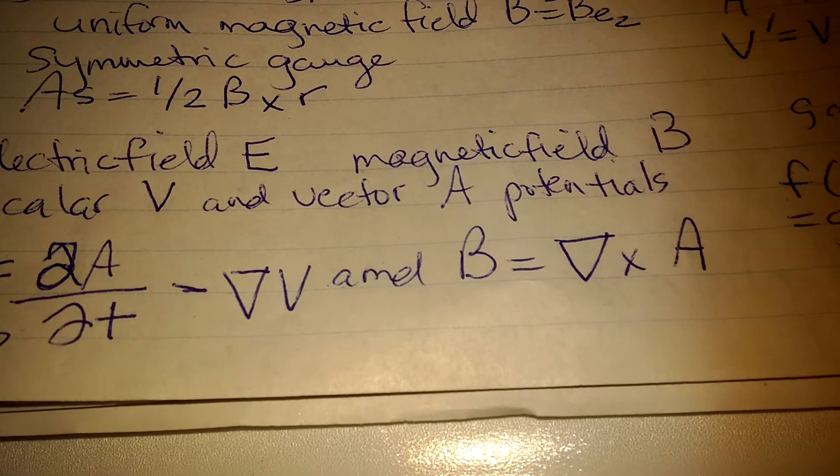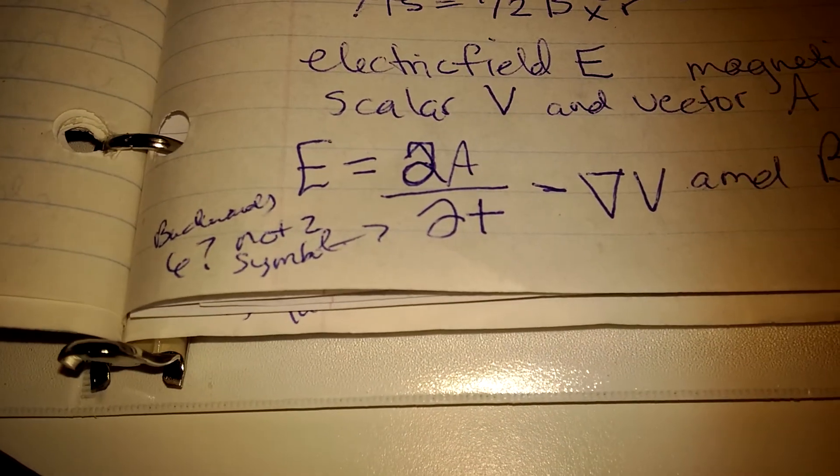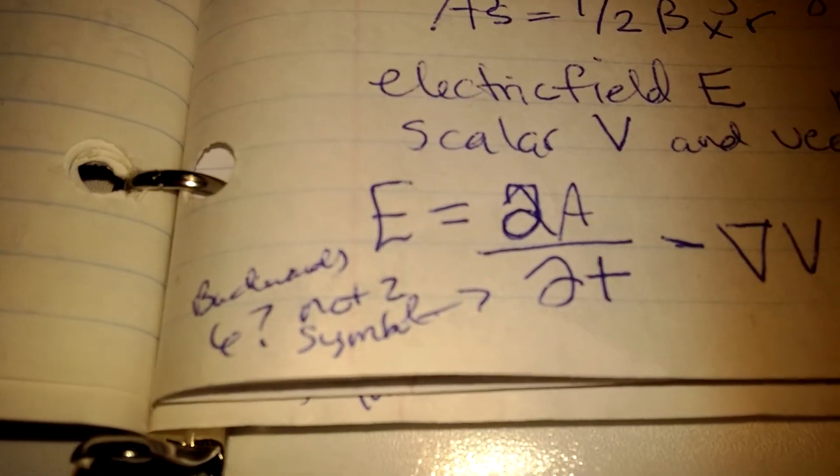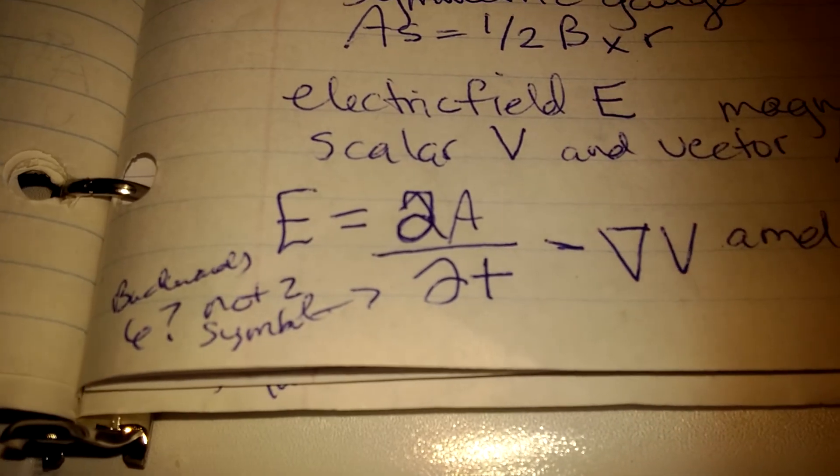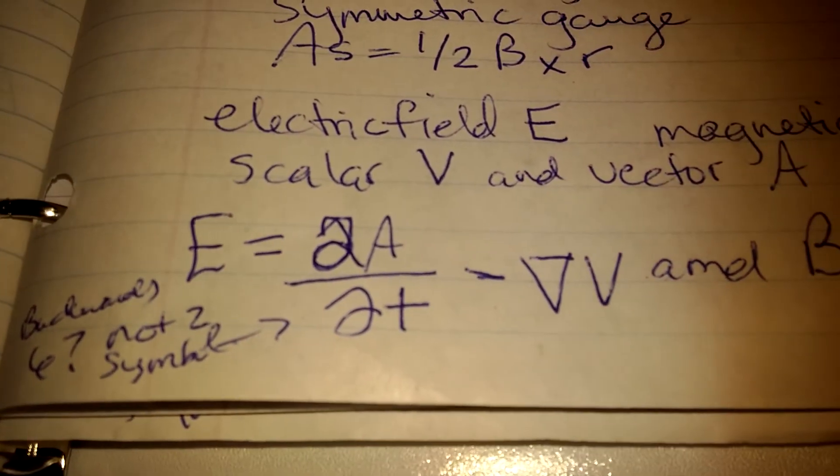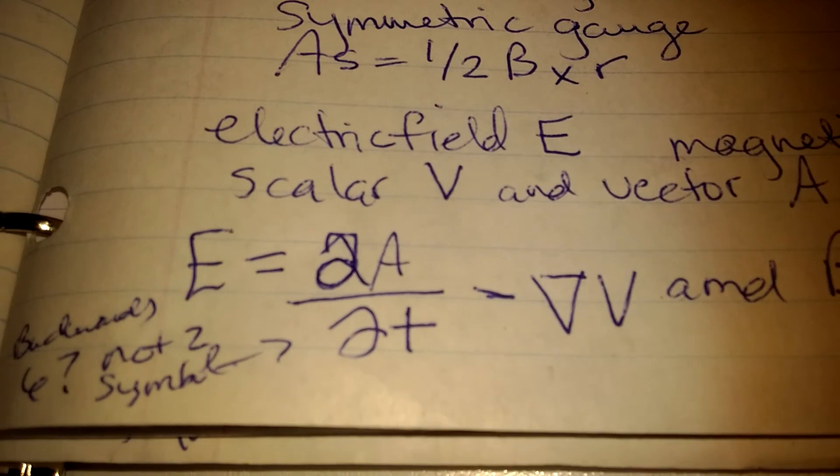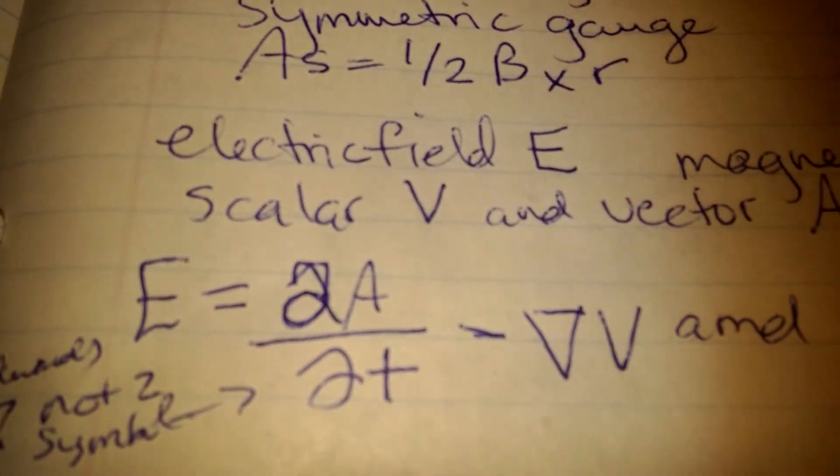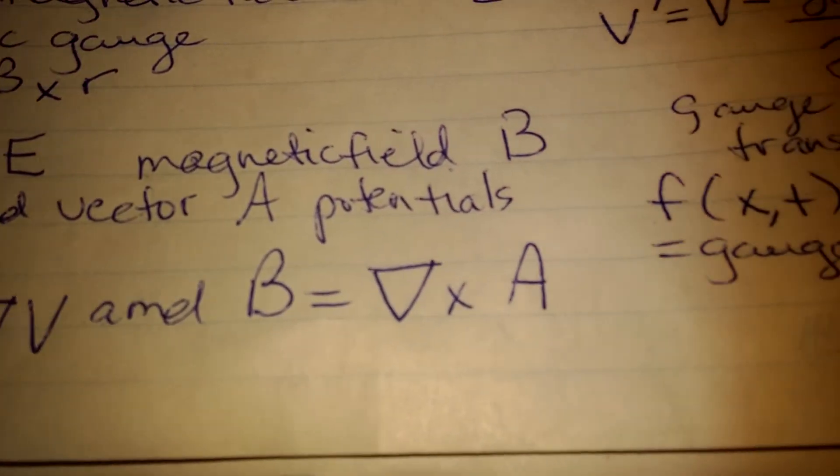Scalar v and vector a potentials, and then there's the, it's a backward 6, not a 2 symbol. It's my backward 6 symbol. I'm not sure what symbol that is, sorry. And here's the numbers there.